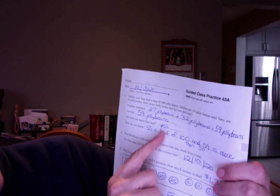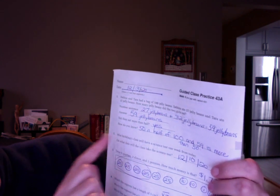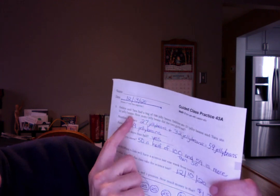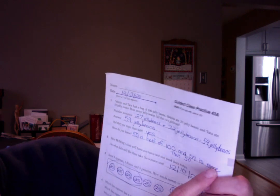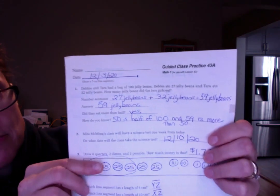Did they eat more than half? Yes. How do you know? 50 is half of 100, right? They had a bag of 100 jelly beans. So 50 is half of that. 59 is more than 50 so you know they ate more than half.